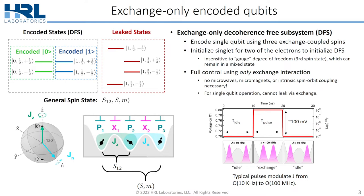The added cost is that we need three dots and three spins, but we gain full qubit control using only the exchange interaction, which looks like voltage pulses on our exchange gates — so-called X gates. So we don't need microwaves, micromagnets, or intrinsic spin-orbit coupling to do spin control.